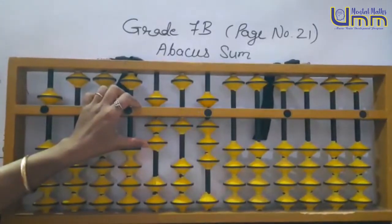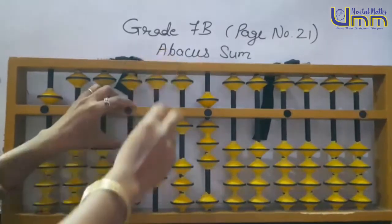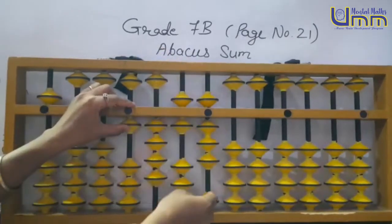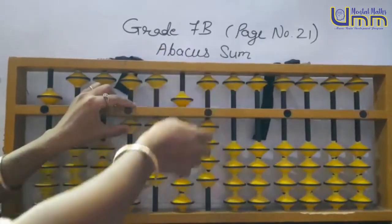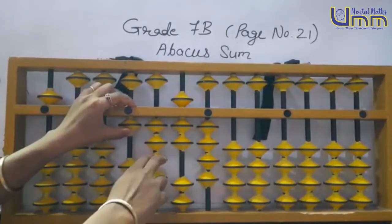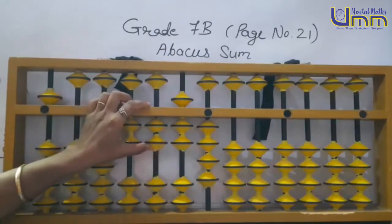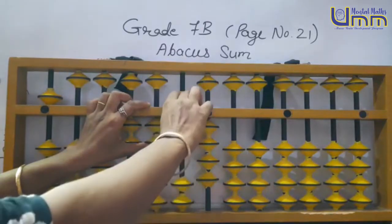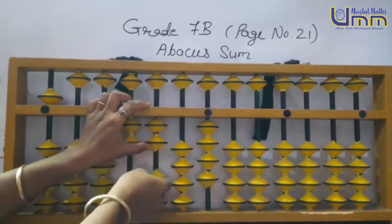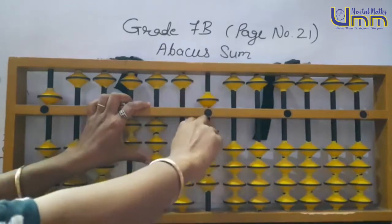756: 7 ke liye plus 2 minus 5 plus 10, 5; 6 plus 1 minus 5 plus 10. Then 831: 8 minus 2 plus 10. 30 ke liye minus 7 plus 10.